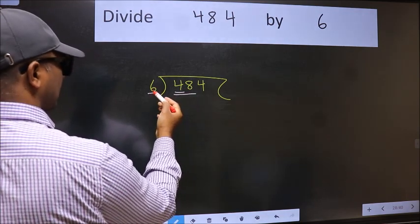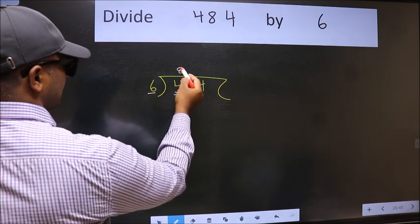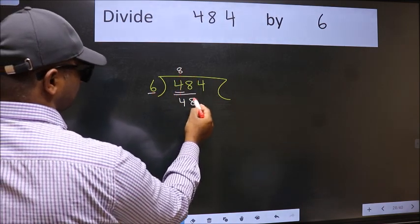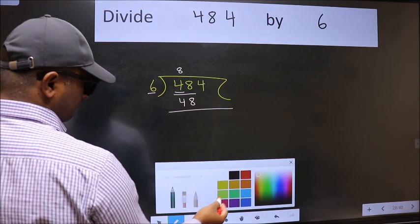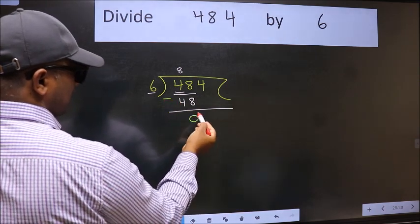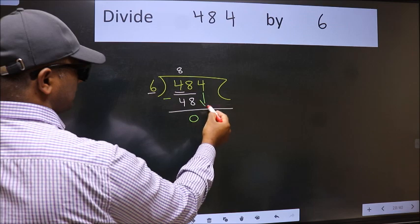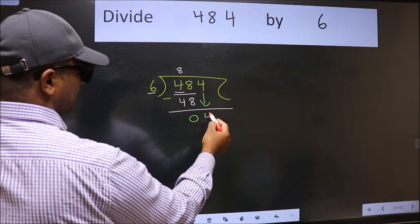When do we get 48 in 6 table? 6, 8 is 48. Now we should subtract. We get 0. After this, bring down the beside number. So 4 down.